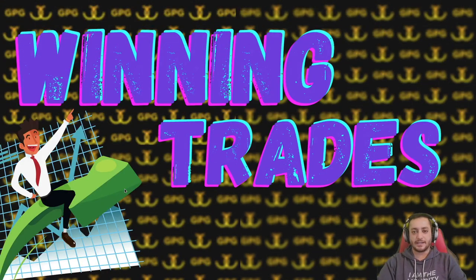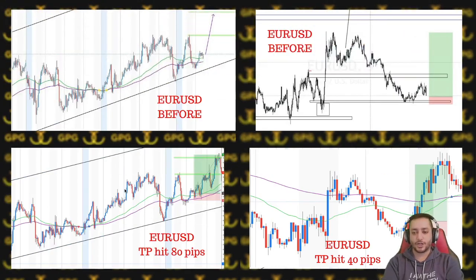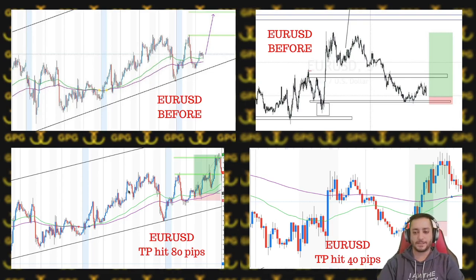Then we had winning trades. We had EUR/USD — we actually had more trades this week, but in the slide you can see two of them. One of them had 80 pips to stop loss and one of them had 40 pips to stop loss.